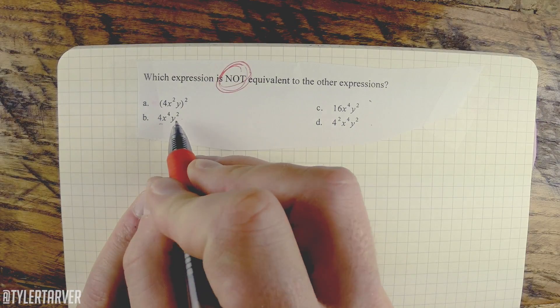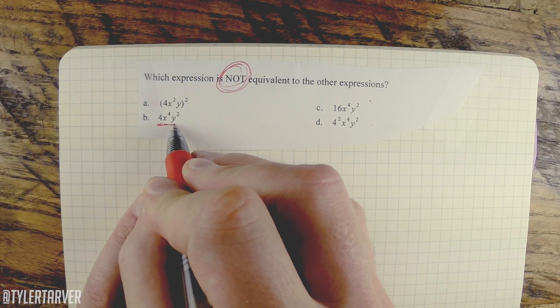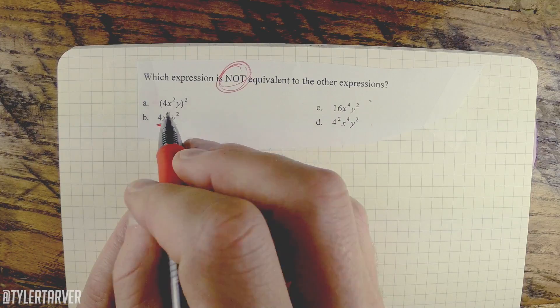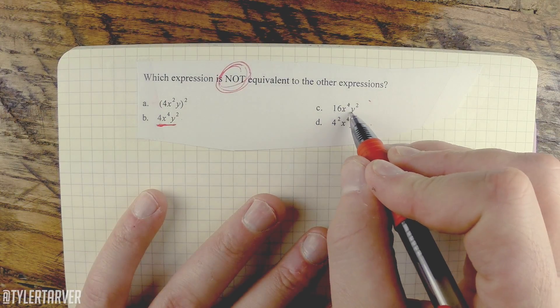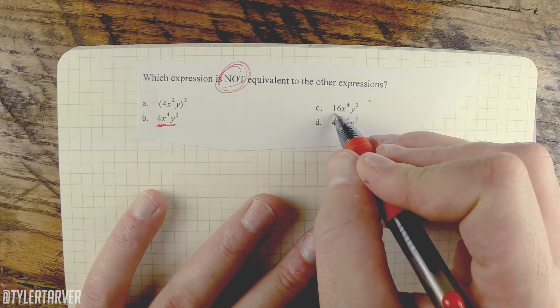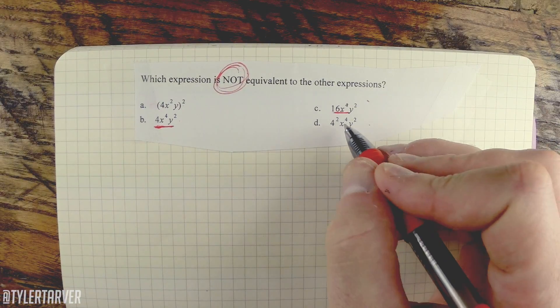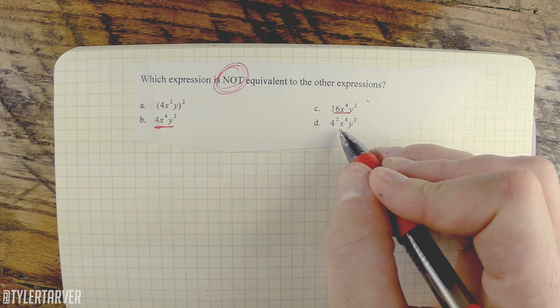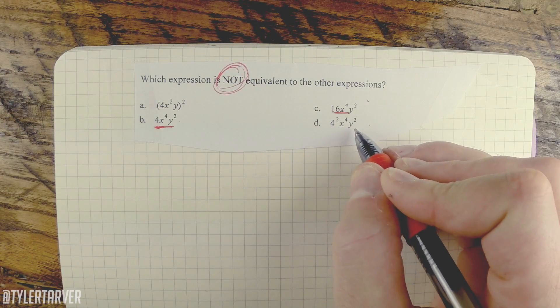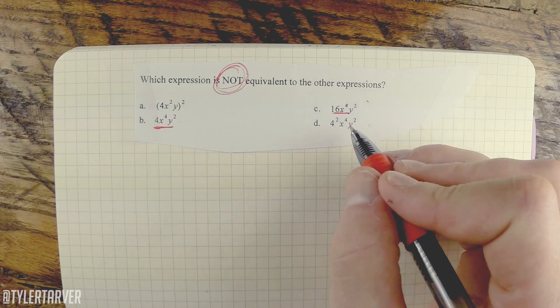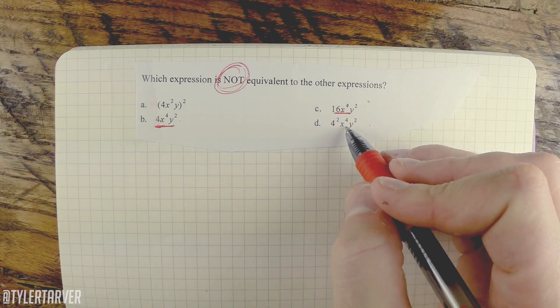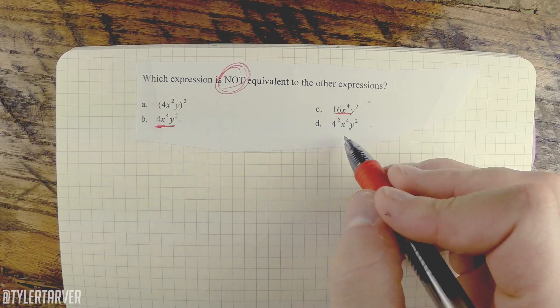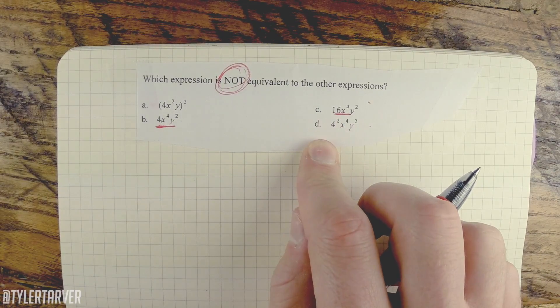We got 4x to the fourth y squared. We can't really make that one any smaller than it is. This one we can distribute, so we'll do that here in a second. And then we've got 16x to the fourth y squared. We can't really reduce that one either, so that one's going to stay as it is as well. And this last one, you've got 4 squared, so we know we can simplify it a little bit. So all these have like x to the fourth y squared. So we know these three are cool in that part, but the regular numbers look like they're going to vary.